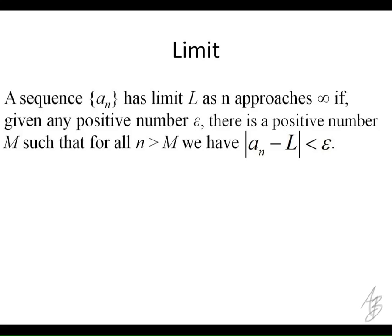Well, it reads like this. A sequence has a limit L as n approaches infinity if given any positive number epsilon, there is a positive number M such that for all n greater than M, we have the absolute value of the difference between a sub n and L is less than epsilon. Makes a lot of sense, right?